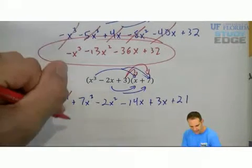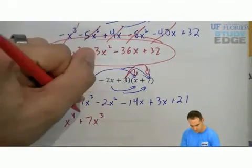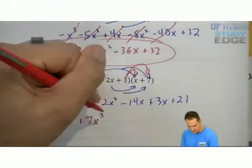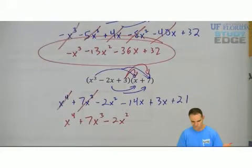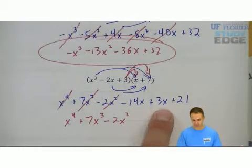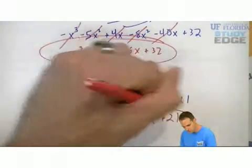Highest power, x to the fourth. Next one, 7x cubed. The next one, negative 2x squared. The next one, negative 14x. Hey, we can combine like terms finally. Negative 14x plus 3x is negative 11x plus 21.